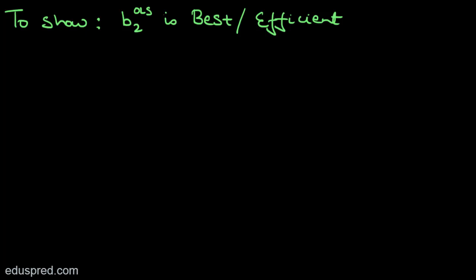The thing to understand here is that the estimators you get by using the method of OLS are not the only estimators that are linear and unbiased. There are many other methods that can give us linear and unbiased estimators. But the good thing about OLS is that the variance of its estimators is less than the variance of estimators from any other method.